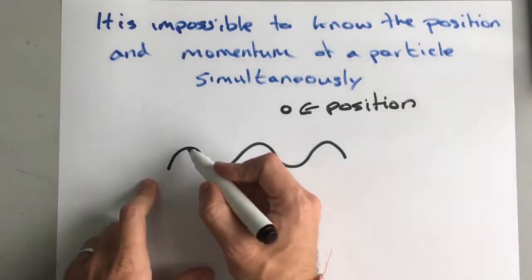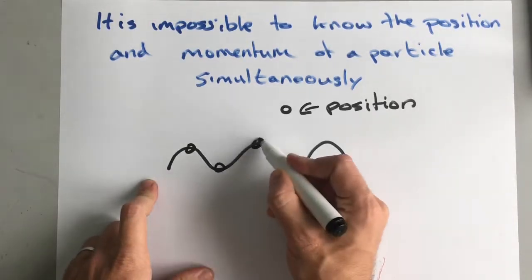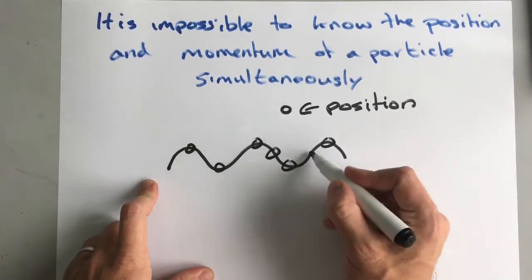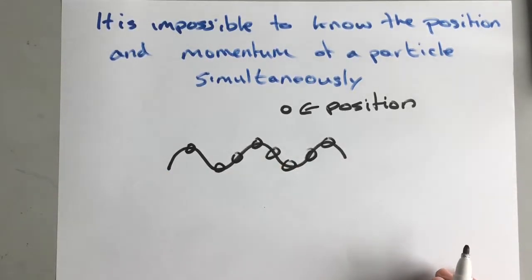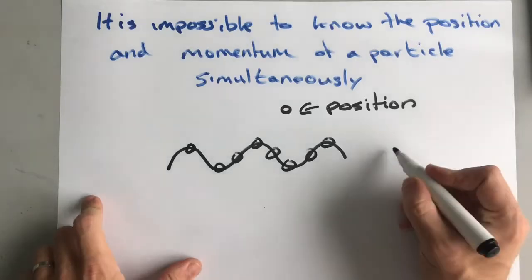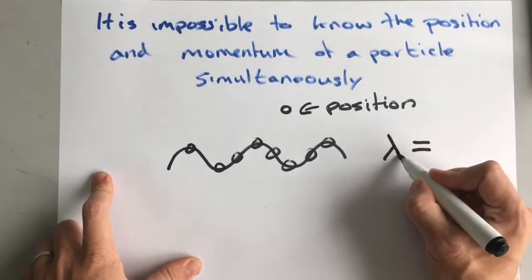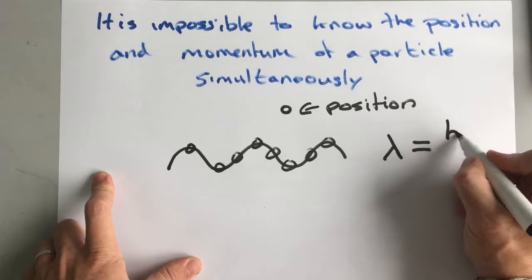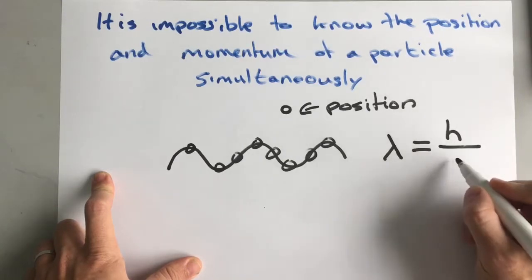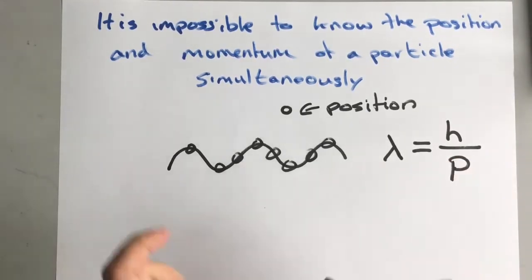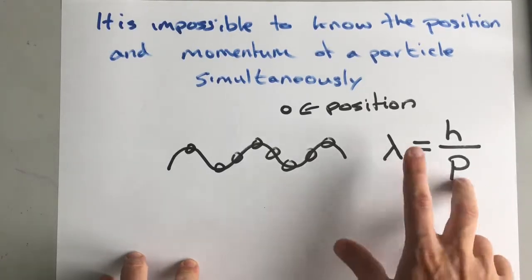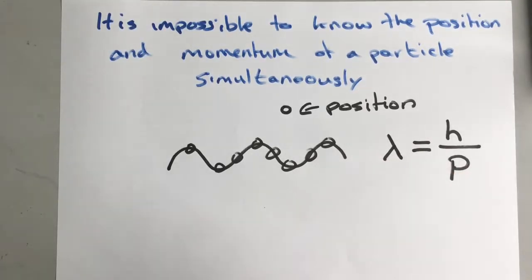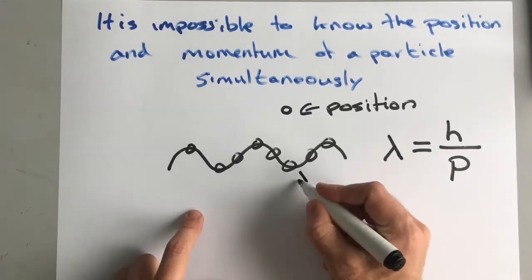A wave is transferring energy of some sort from one place to another, and a wave is not a specific position — it is spread out over an area of space. A wave, however, definitely has momentum, because we know that the wavelength of a wave is Planck's constant over its momentum. That's de Broglie's wavelength. So momentum is very much a wave property.